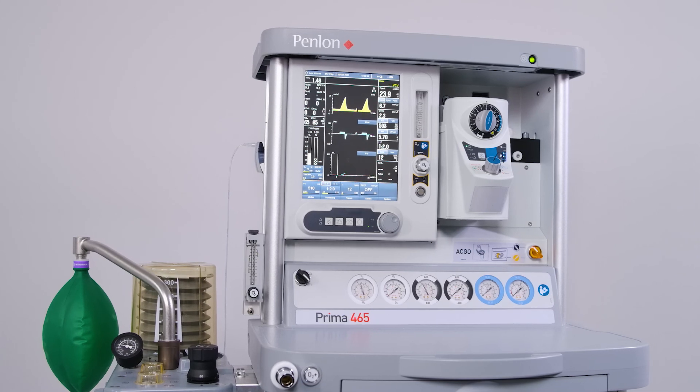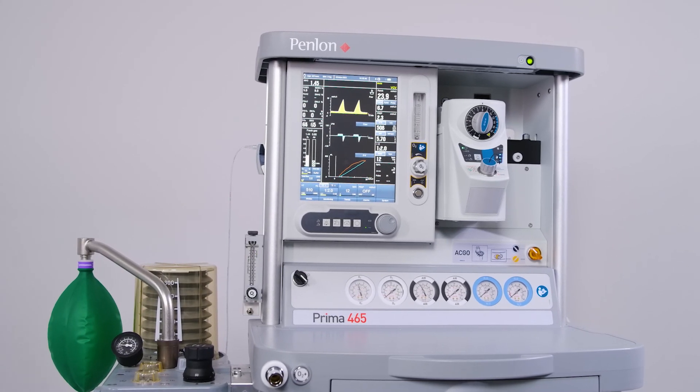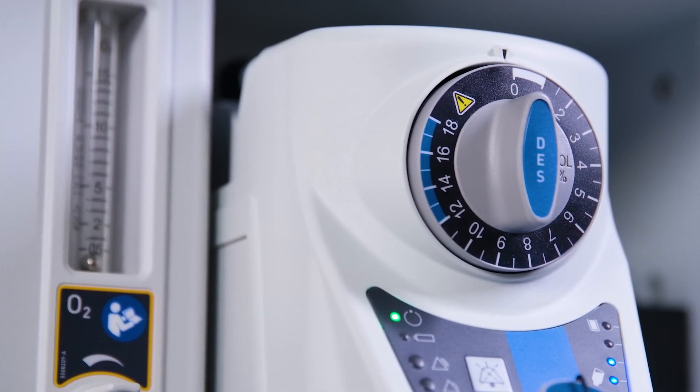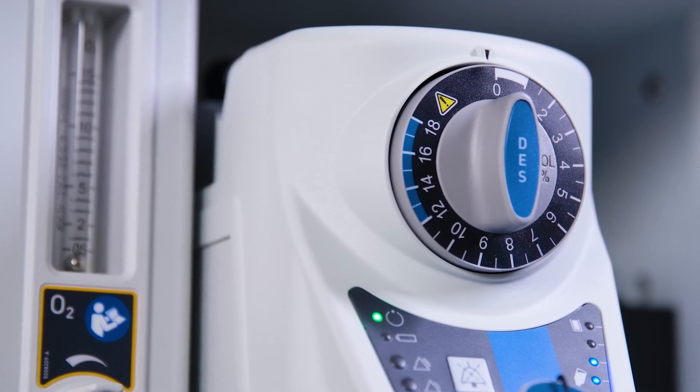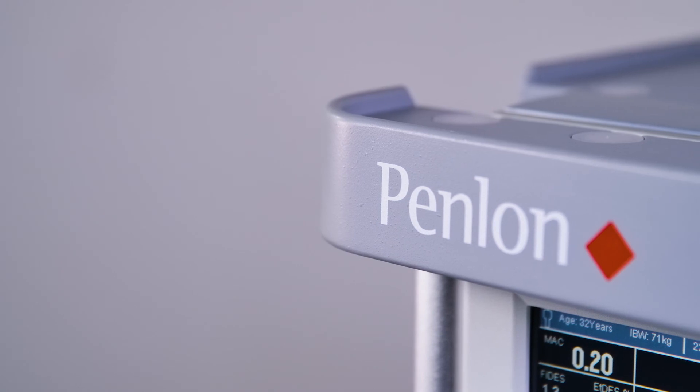Service and repair: As detailed in the user manual, operational checks including vaporizer output should be carried out every six months. For details of two-year checks, refer to the service manual or contact Penlon Technical Support for further information.